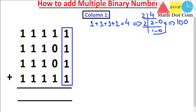Now we apply this to the column-wise addition. We write the number 100 in place: the rightmost zero stays in column one, the next zero goes as a carry, and the one goes as a carry into the next column. So from column one we have the result 100 distributed across the columns.